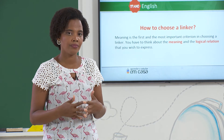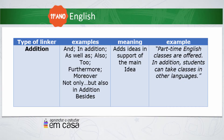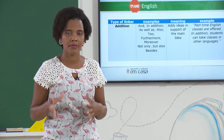Let's see some of them. The first one is the linker to add information — addition. We have some examples: and, in addition, as well as, also, furthermore, moreover, not only but also, besides. We use them to add ideas in support of the main idea. For example: part-time English classes are offered. In addition, students can take classes in other languages — just to add more information on the main topic.